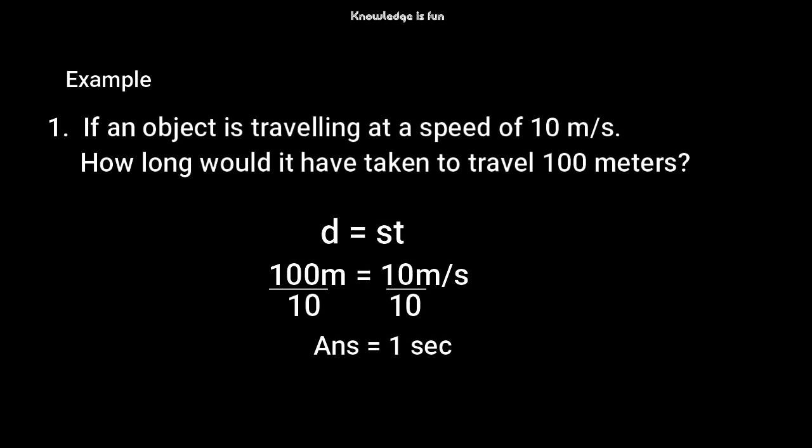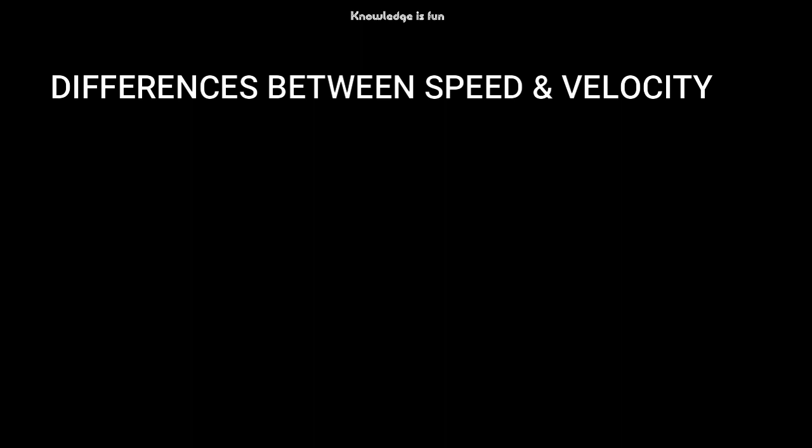It will take the object one second to move for a distance of 100 meters. Now let's talk about the differences between speed and velocity.